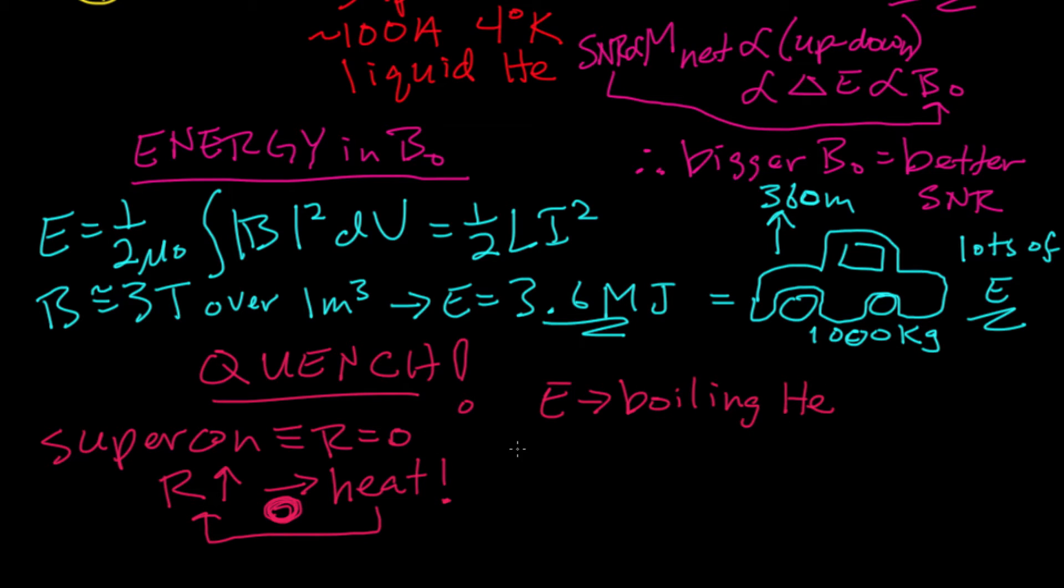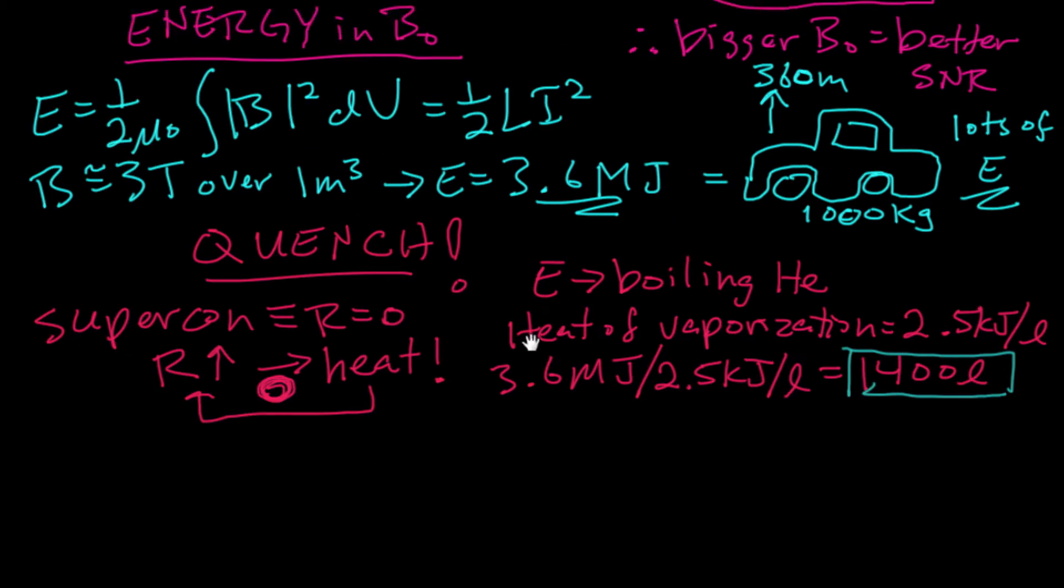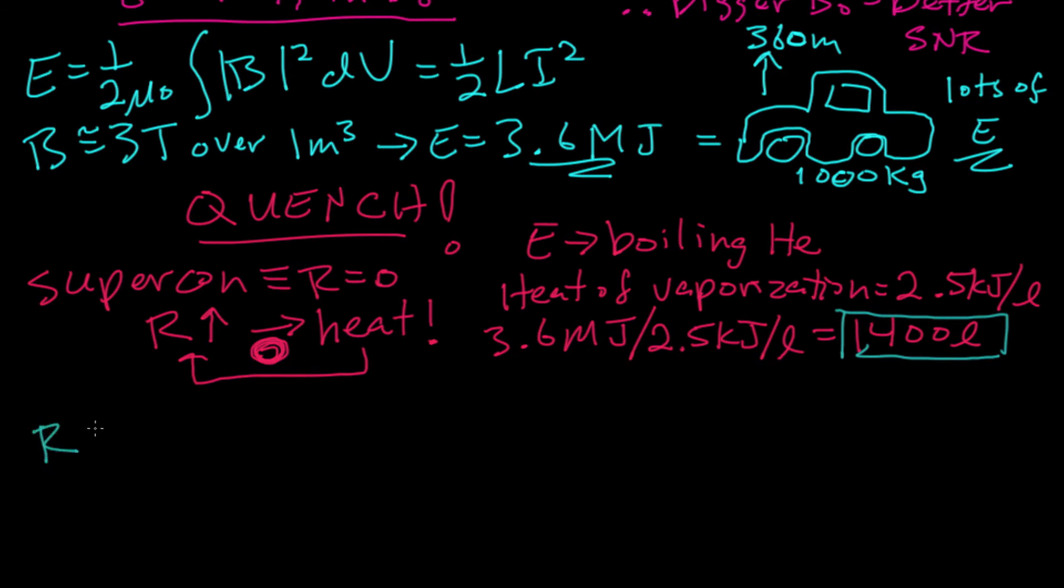The energy ends up going into the boiling of the liquid helium. The heat of vaporization of liquid helium is about 2.5 kilojoules per liter. If you do the math, that 3.6 megajoules of energy into 2.5 kilojoules per liter means that that amount of energy can boil off 1,400 liters of liquid helium. Not coincidentally, that's just about the amount of liquid helium that's in a 3T scanner.